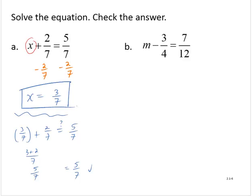m subtract 3 fourths is equal to 7 twelfths. Identify the variable we wish to isolate, m. There's another term associated with the m. And we have a subtraction of 3 fourths. So to undo the subtraction, we will add 3 fourths to both sides.